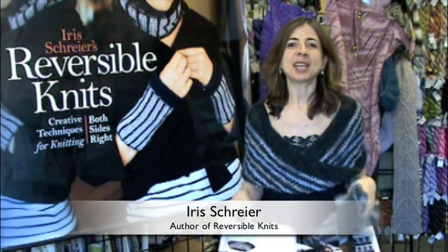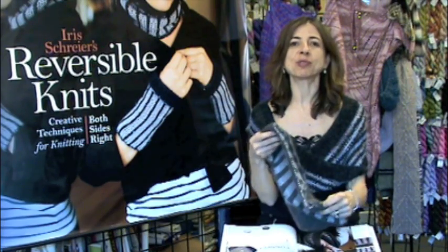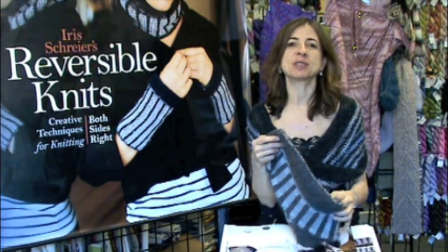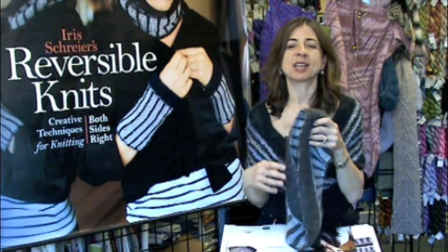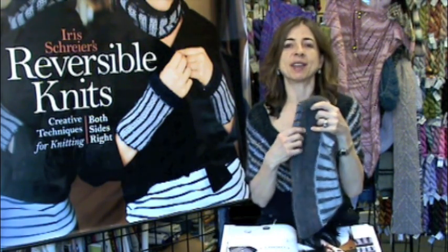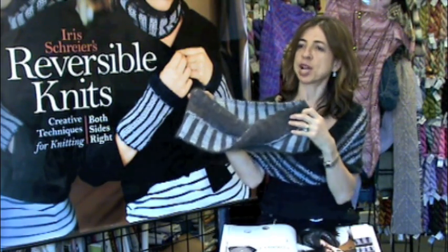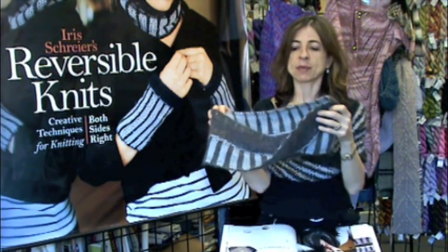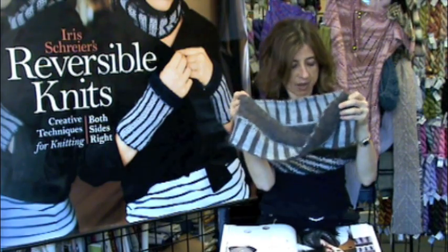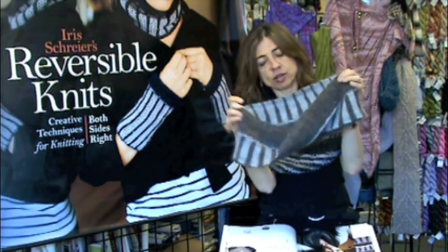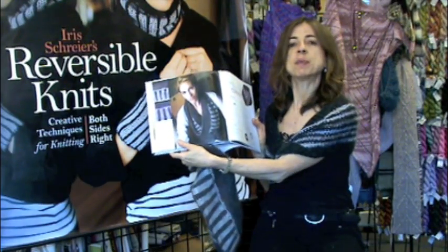Today I'm going to show you how to create a mobius using a unique cast-on that allows you to work in an infinite loop. That's what I used in this project in Reversible Knits to create this charcoal mobius collar, which can be found on page 104 of the book.